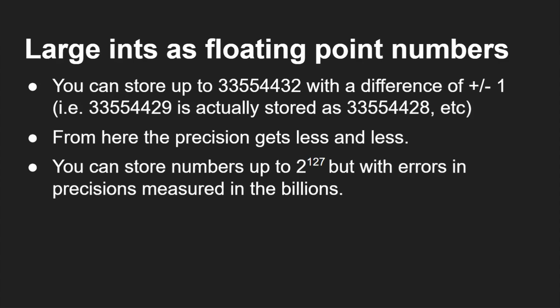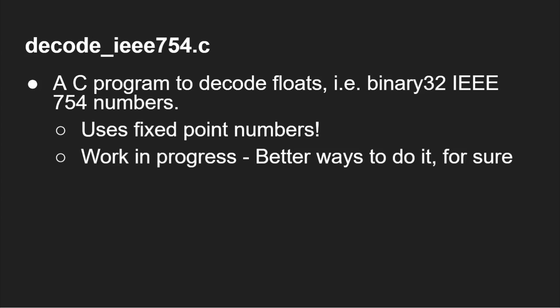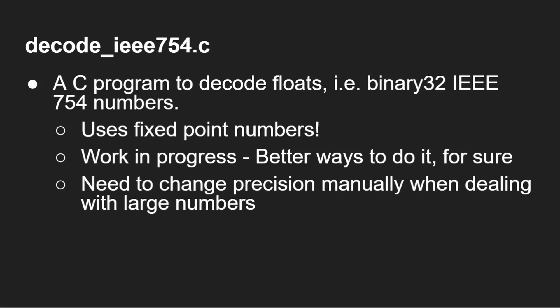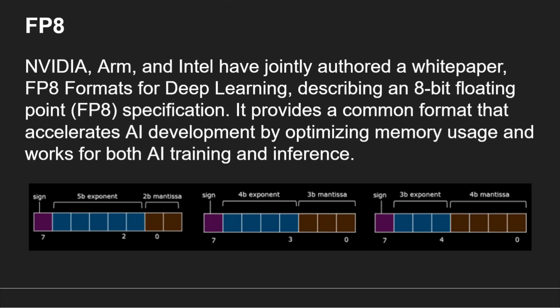I wrote a little program called decode_ieee754.c that takes a float out of memory and looks at those ones and zeros to decode it, rather than just printing the float normally. It uses fixed point numbers to calculate the floating point number — it's a work in progress, a hack I threw together to help understand floating point numbers and IEEE 754. You need to change the precision manually because it uses fixed point, so if you're dealing with big numbers you'll need to adjust that in the code. It's in my GitHub repository — just search for Gary Explains GitHub.